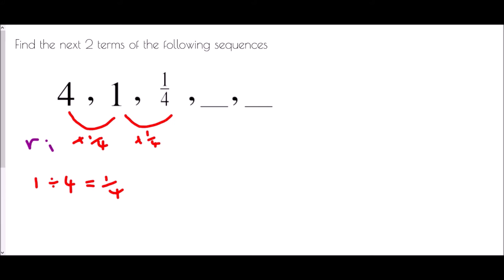Our r value, the common ratio, is one quarter, so we just need to repeat that multiplication. A quarter times a quarter: multiply the top numbers (1×1) and the bottom numbers (4×4) to get one sixteenth. Do that again — one times one is one, and sixteen times four gives us sixty-four. So the next term is one over sixty-four.